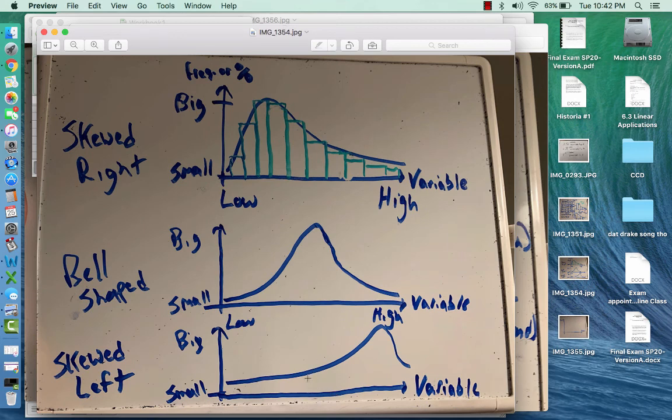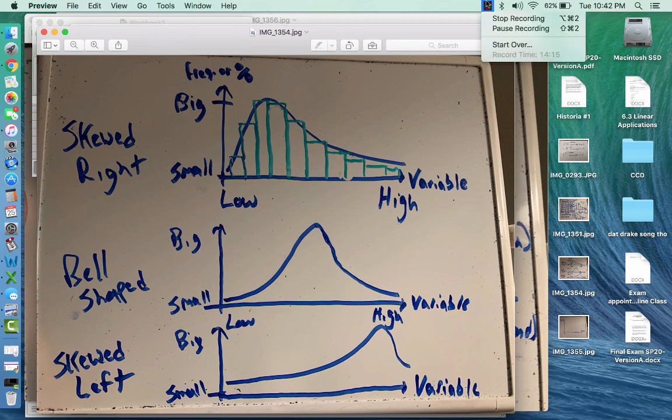And then lastly, for skewed left, it's the opposite of skewed right, where the mode is on the high end, the median is very close to it, and then the mean will be less than the median. So since the mean is sensitive, it goes towards the skewed, towards the extreme values. So keep that in mind when you're thinking about these three main shapes of distributions for our Intro to Stat class. See you next time.